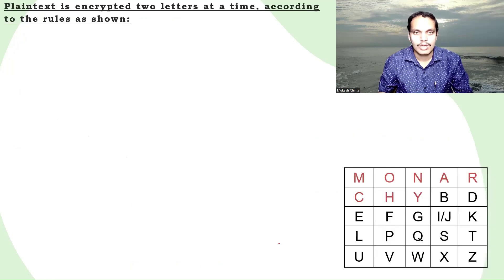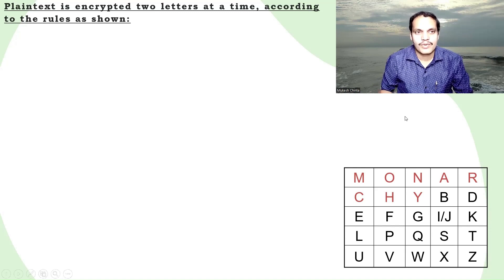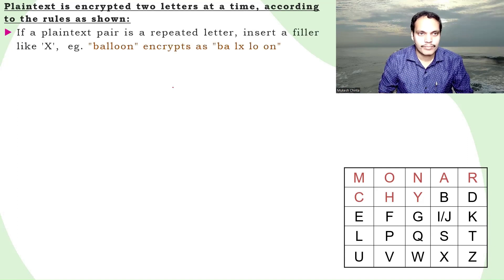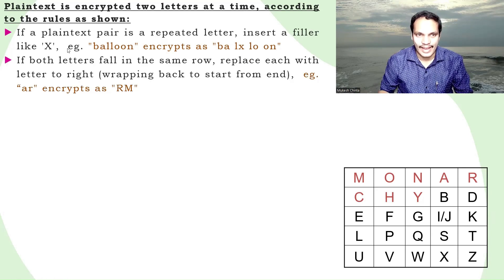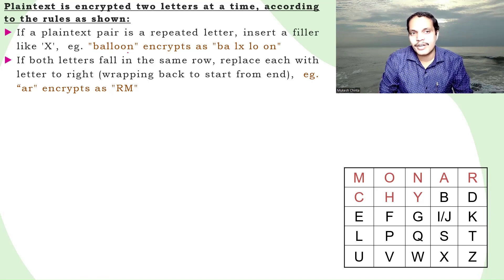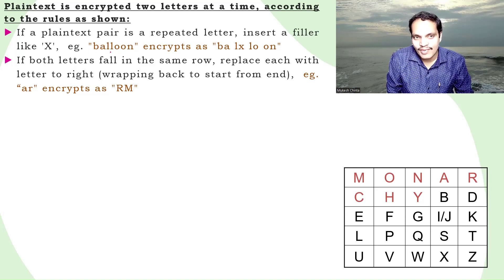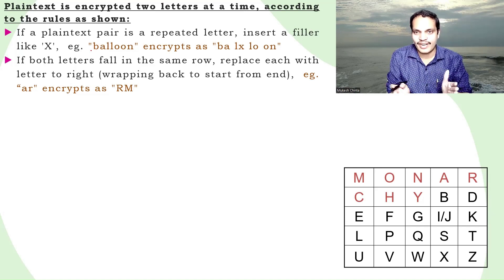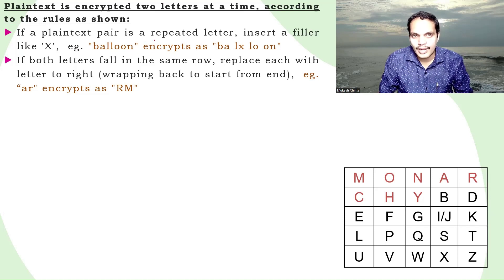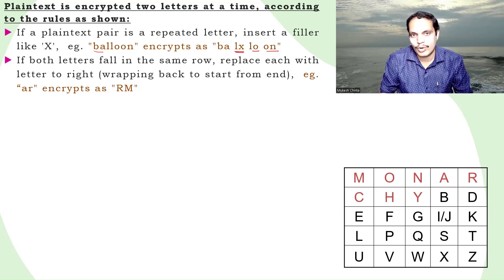Now let me show you how the encryption process works. Plaintext is encrypted two letters at a time according to the following rules. The first rule: if a plaintext pair contains a repeated letter, insert a filler like X. For example, 'balloon' is broken into pairs: B-A, then L-L becomes L-X, then L-O, then O-N. Under no circumstances should a pair contain the same letter twice — they should always be different.